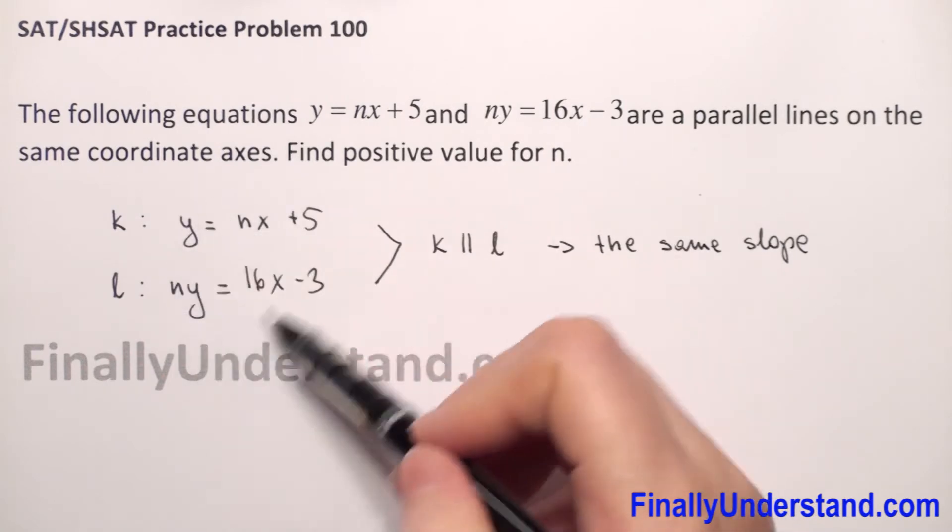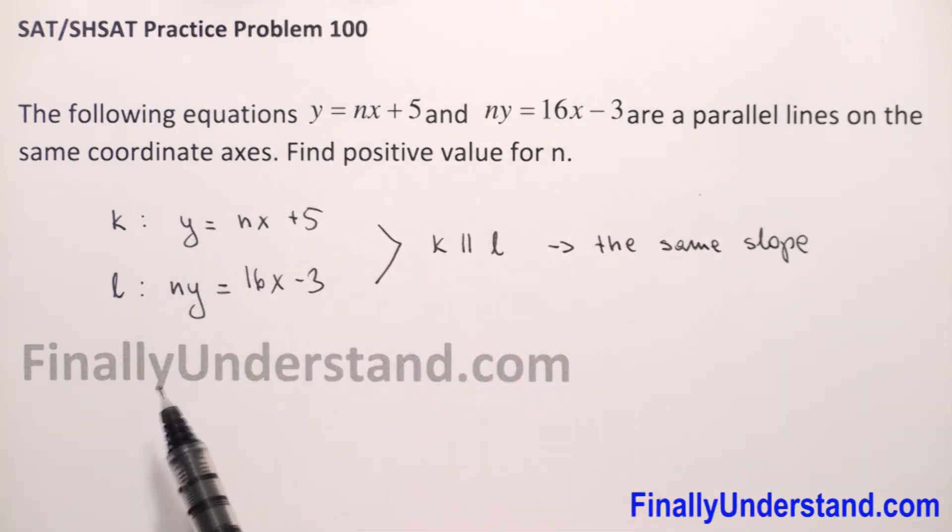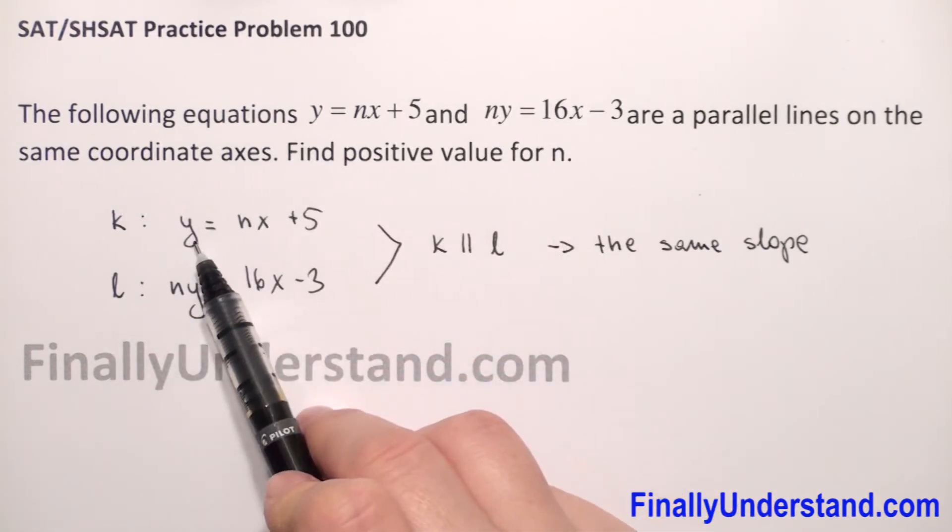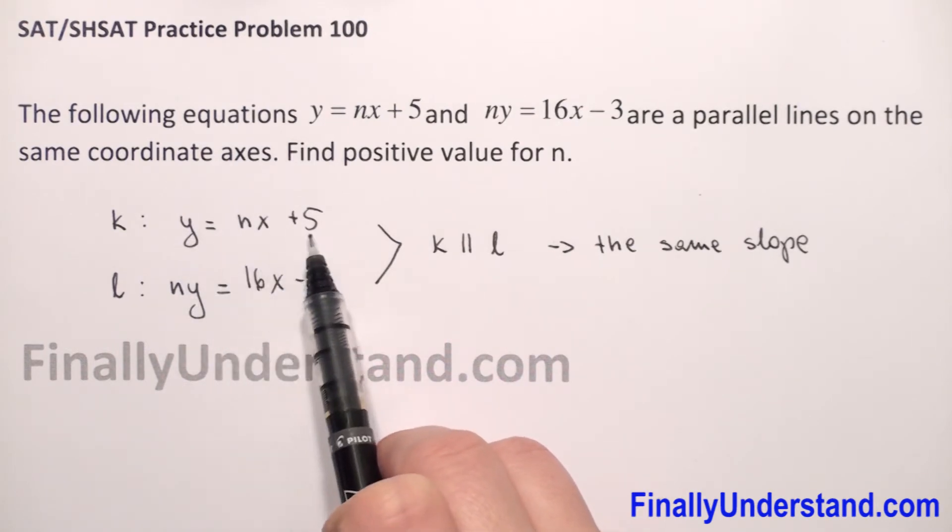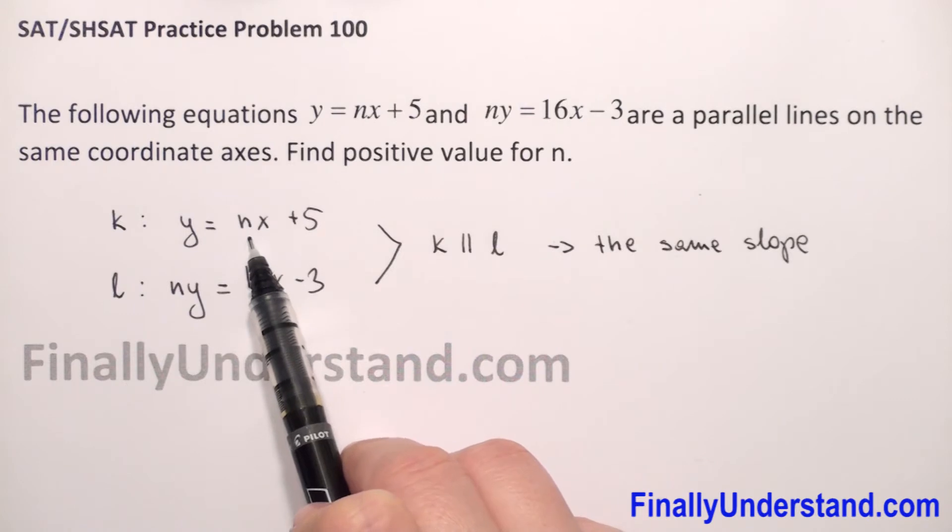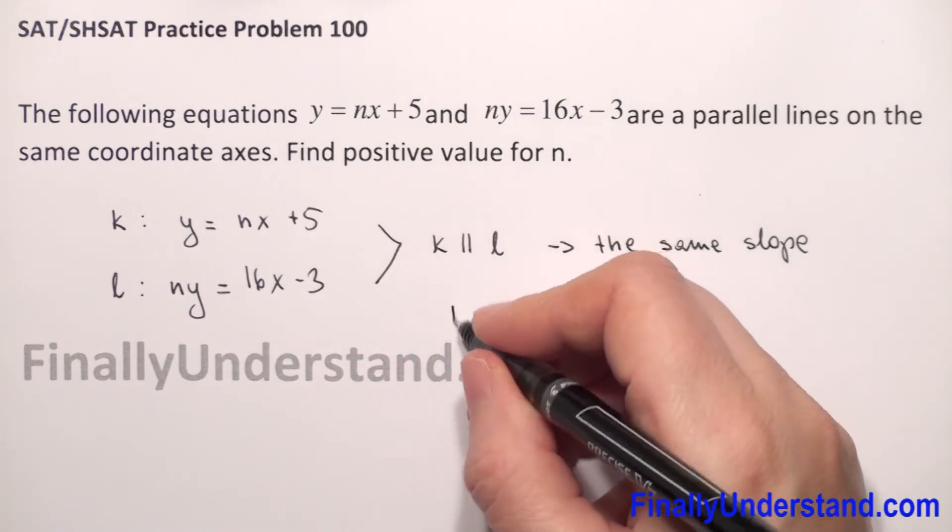What do we need to find from these two equations? The slope. For the first line, we have the equation y = nx + 5. The slope is always the coefficient before x, so the slope of line k is n.